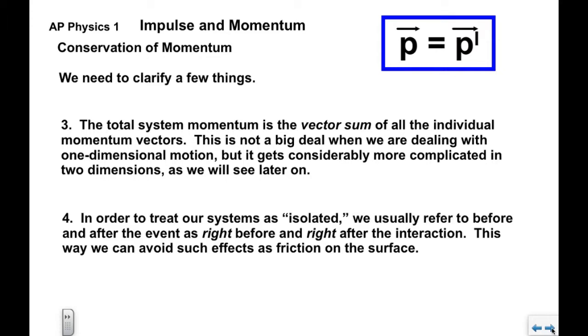In order to treat our systems as isolated, we usually refer to before and after the event or the interaction as right before and right after the interaction. This way we can avoid effects like friction on the surface or any other external effects. When we say p equals p prime, we mean the momentum of the system right before and the momentum of the system right after.